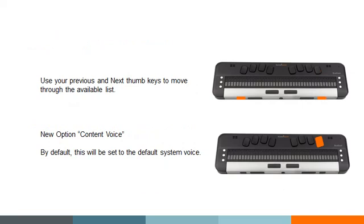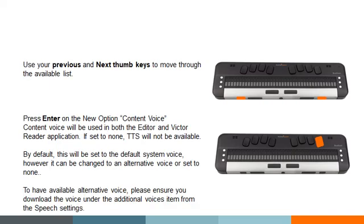Braille grade — contracted braille — so this is showing what my current braille grade is set to. We have our preferred grades for display, and our various computer braille or literary braille tables. But there is a new option here called content voice. By default this will be the same as your system voice, so if you're in English these would both be set to Sharona. But you can either turn the content voice off — there may be times where you only want your menus read aloud and just want to read in braille in the editor or Victor Reader — or the content voice is the voice used when reading content in Victor Reader and the editor.